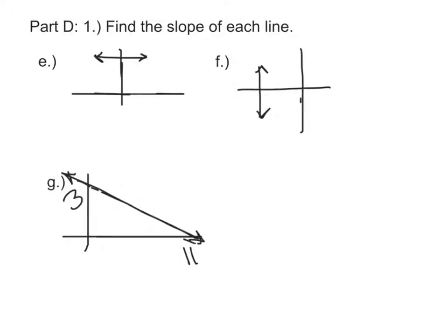Determining the slopes from a graph: if the line is a horizontal line, remember that slope is also defined as rise over run. So with the horizontal line, we don't rise at all.